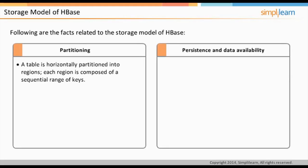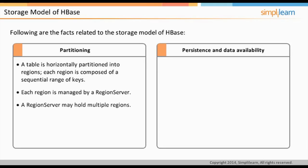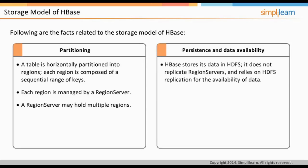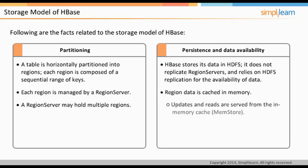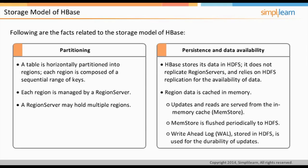In HBase, a table is horizontally partitioned into regions. Each region is composed of a sequential range of keys and is managed by a region server. A region server may hold multiple regions. HBase stores its data in HDFS and relies on HDFS replication for data availability. The region data is first cached in memory; updates and reads are served from the in-memory cache called MemStore. Periodically, MemStore is flushed to HDFS. A Write-Ahead Log stored in HDFS is used for the durability of updates.